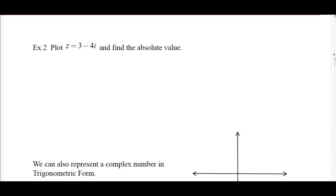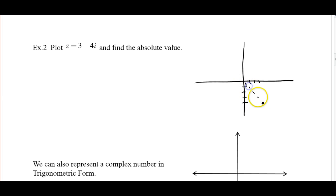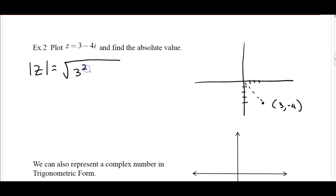Another example: let's plot and find the absolute value. We need the point 3 and negative 4, so here's our point at (3, -4). The absolute value of z is the square root of 3 squared plus negative 4 squared, which is simply 5. If you remember your Pythagorean triples, you'd see it's a 3-4-5 triple.